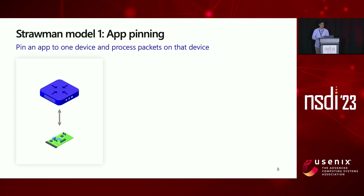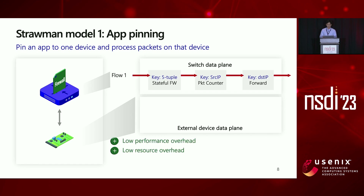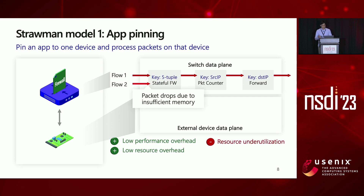We explore a few design options. The first model is the app-pinning model, which pins an app to one specific device and processes packets of that app entirely on that device. Using a stateful firewall consisting of three stateful objects as an example: since the app is pinned to the switch, packets can be processed entirely at the switch, resulting in low performance and resource overhead because it does not reroute packets to external devices. However, in some cases due to insufficient resources at the switch, some packets cannot be processed even though we have available resources on external devices, causing resource underutilization.